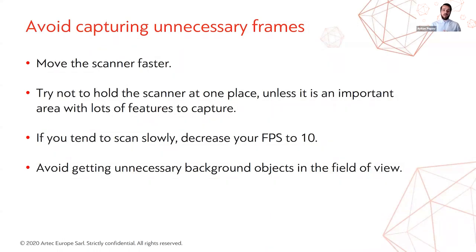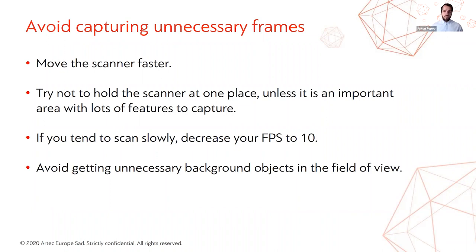A few ways to reduce unnecessary frames: first, move the scanner faster — Leo's and EVA's scanning speed allows it. Also, try not to hold the scanner in one place unless it's an area with many fine geometrical details. The latest Leo update helps with this: if you stop moving, it will automatically decrease the FPS ratio and bring it back up once you start moving again. If you tend to scan slowly, you can also manually decrease FPS to about 10. Finally, avoid getting unnecessary background objects in the scanner's field of view.